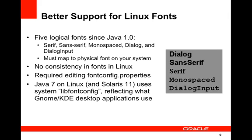Better support for Linux fonts. For Solaris and Windows, logical fonts for the JDK are statically specified in font config properties files. On various Linux implementations, there was no assurance of the presence of particular fonts to support certain locales, requiring manual editing of the font config properties. In Java 7, Linux now uses the system lib font config, reflecting what the GNOME and KDE desktop applications actually use.